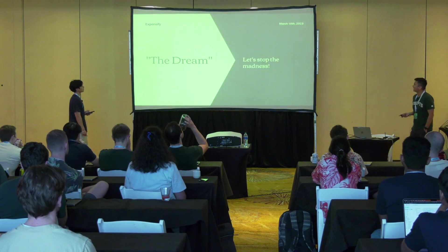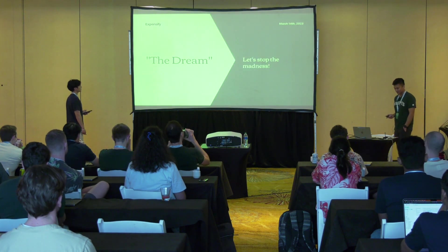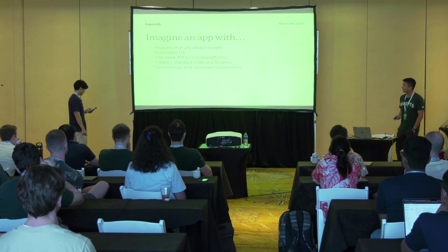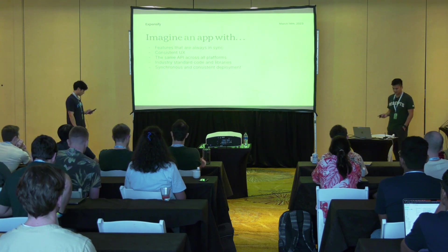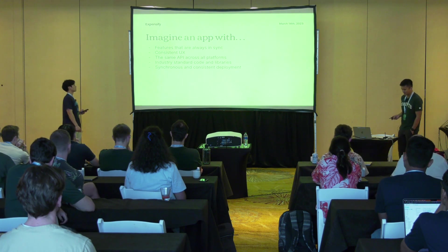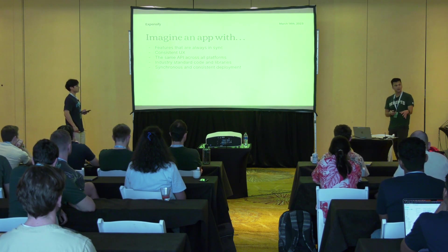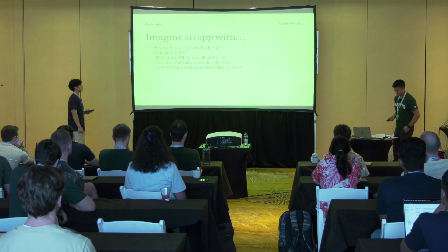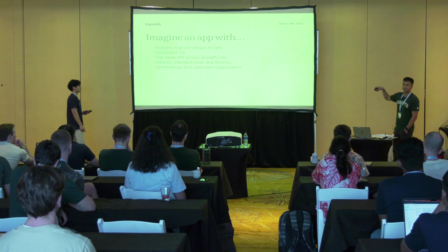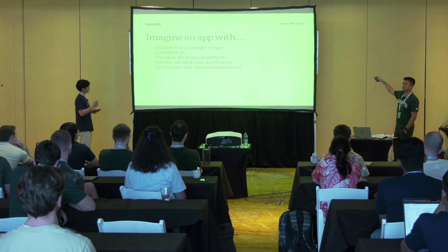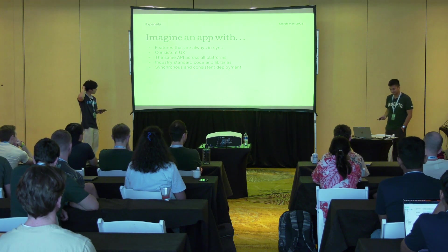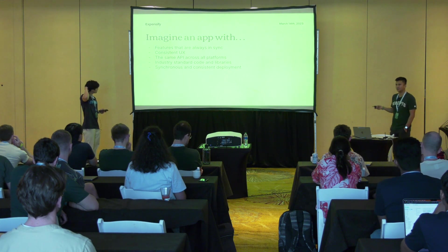So how do we get out of this mess? We want an app that has features that are always in sync, consistent UX across all platforms, and uses the same API across the board. We used to have commands that were mobile only or web only. We'd even have spots in the API code where you'd say "if the request is coming from the mobile app, do this; if it's coming from web, do something else." This just leads to problems as you build on top of that more and more.